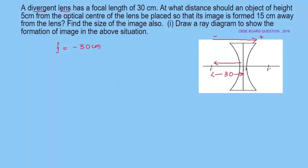The object is placed at a certain distance which we don't know — that is what we have to find out. The height of the object is given as 5 centimeter. The image is formed 15 centimeter away from the lens. To measure the image distance we have to go towards the left from the optical center, so the image distance v is minus 15 centimeter.